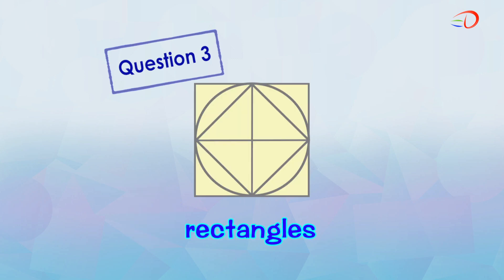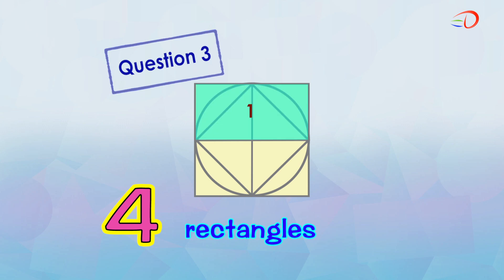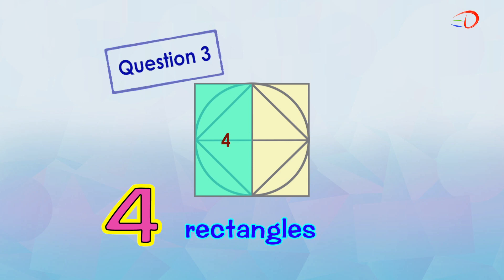How about rectangles? Can you find them? Yes, there are four rectangles: one, two, three, and four. From this lesson, we have learnt to identify basic shapes in a given figure. Learn more about some useful shapes in our next video.